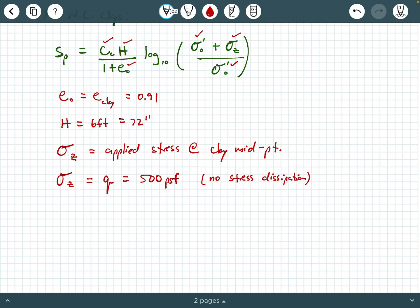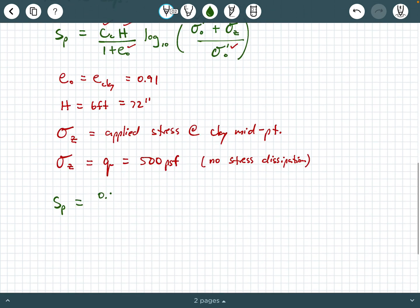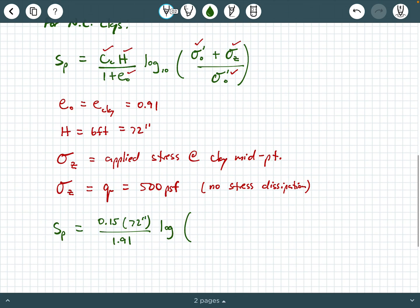So when we substitute all these values in, we're going to end up writing S sub P equals C sub C. What was that? 0.15 times the thickness, which was 72 inches, divided by 1.91 log, and that's a log base 10, of 663.1 PSF plus 500 PSF, all divided by 663.1 PSF. And you can notice that the units of PSF inside the logarithm, they definitely cancel, right? Because everything has PSF in the numerator and the denominator, so all those cancel.